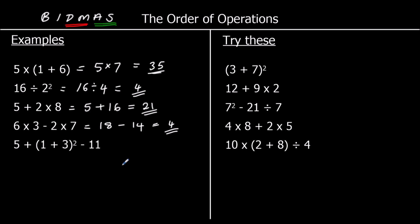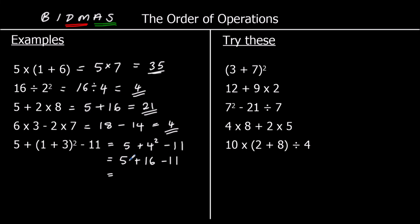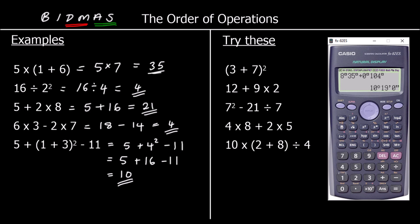For the last one we do have brackets, so we do that first — 1 plus 3 is 4. So that's 5 plus 4 squared minus 11. We've got indices: 4 squared is 16. So we've got 5 plus 16 minus 11. Now addition and subtraction from left to right: 5 plus 16 is 21, take away 11 is 10. If we did any of these on a calculator, the calculator performs the correct order of operations and would get the same answer.